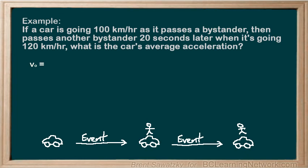Considering that we don't know anything about when or where the car originally started, and we have all the information about when it passed each bystander, let's consider our event to be the second option — that is, from when it passed the first bystander to when it passed the second. Therefore our V naught is 100 kilometers per hour.